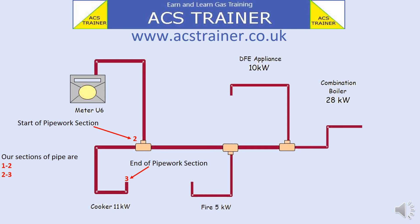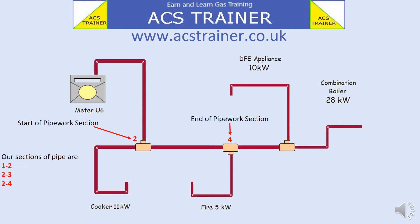The next section of pipe work — point two is now the start point. Point three is the end point at the cooker. Our section of pipe work here is two to three. Similarly, point two at the tee to the next tee is point four. Remember, point three was the cooker. This section is two to four.